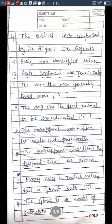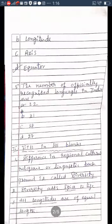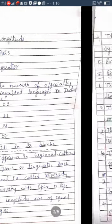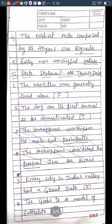Question four: The earliest Veda composed by the Aryans was Rig Veda — R-I-G-V-E-D-A. Question five: Early man worshipped blank. The answer is nature — N-A-T-U-R-E. To review the fill in the blanks: diversity, spice, longitudes, Rig Veda, and nature.